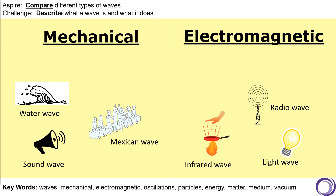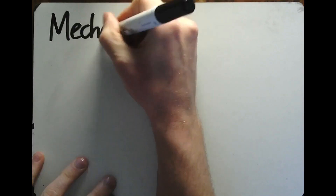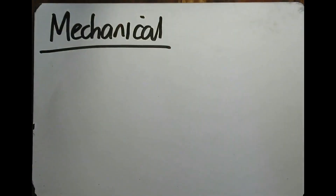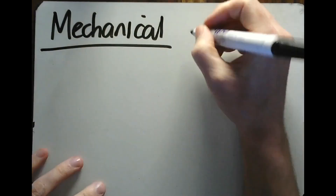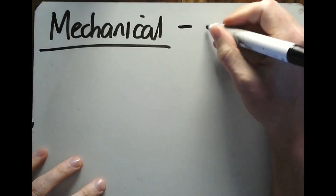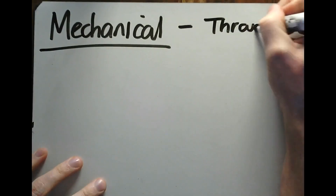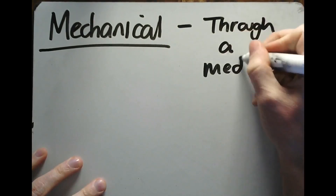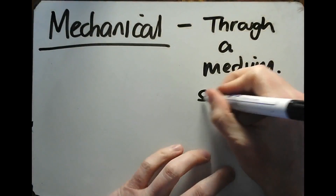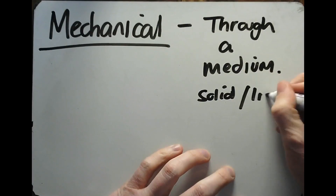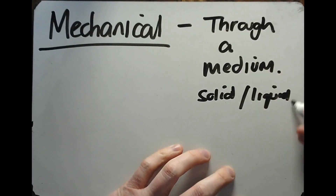I'm going to hand you back over to Mr Marseille, who's going to explain the difference between these two. So type one is mechanical. In a mechanical wave, something has to travel through a substance — we call this a medium. A medium is just an area of particles; it could be a solid, it could be a liquid, or it could be a gas.